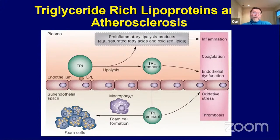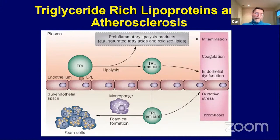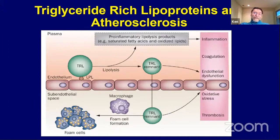How do triglyceride-rich particles cause atherosclerosis? It's probably not the large fluffy particles but the remnants. Lipolysis via lipoprotein lipase creates smaller remnant triglyceride-rich particles that can penetrate the endothelium into the intimal space and interact with macrophages — probably more effectively than LDL — forming foam cells. During lipolysis, saturated fatty acids, oxidized lipids, and pro-inflammatory compounds are released, which can promote inflammation, coagulation, endothelial dysfunction, and oxidative stress, all contributing to atherosclerosis beyond foam cell formation.